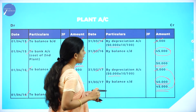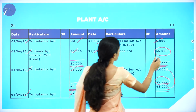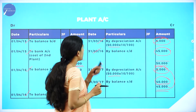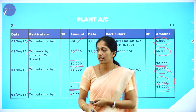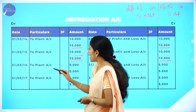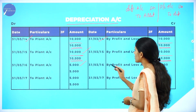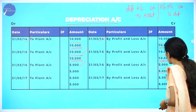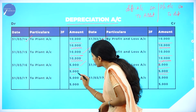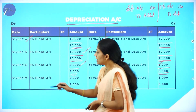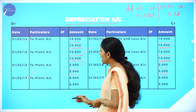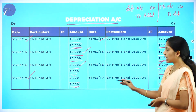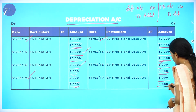For Year 3 (31-3-2016): depreciation is rupees 5,000 — debit plant account 5,000, by profit and loss account 5,000. For Year 4 (31-3-2017): again depreciation rupees 5,000 — debit plant account 5,000, by profit and loss account 5,000.